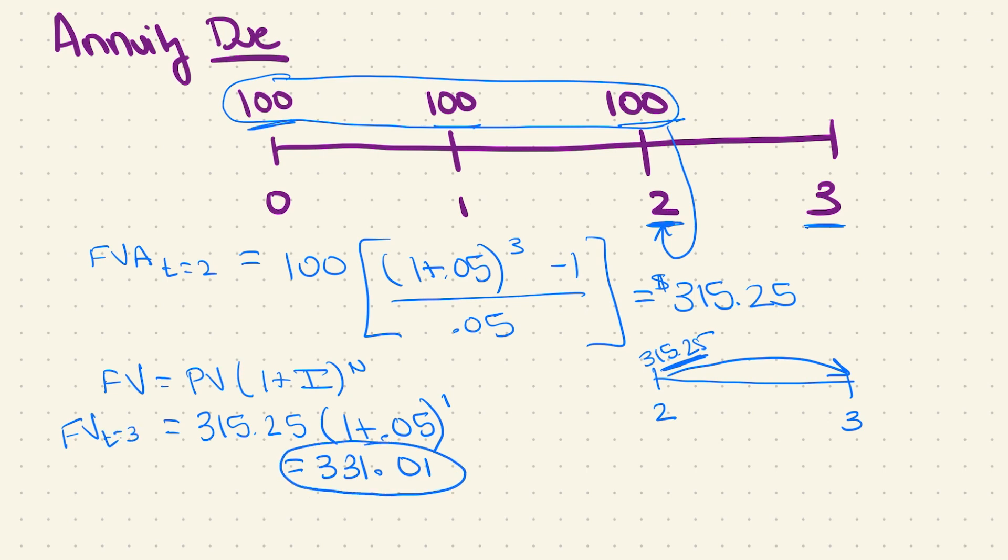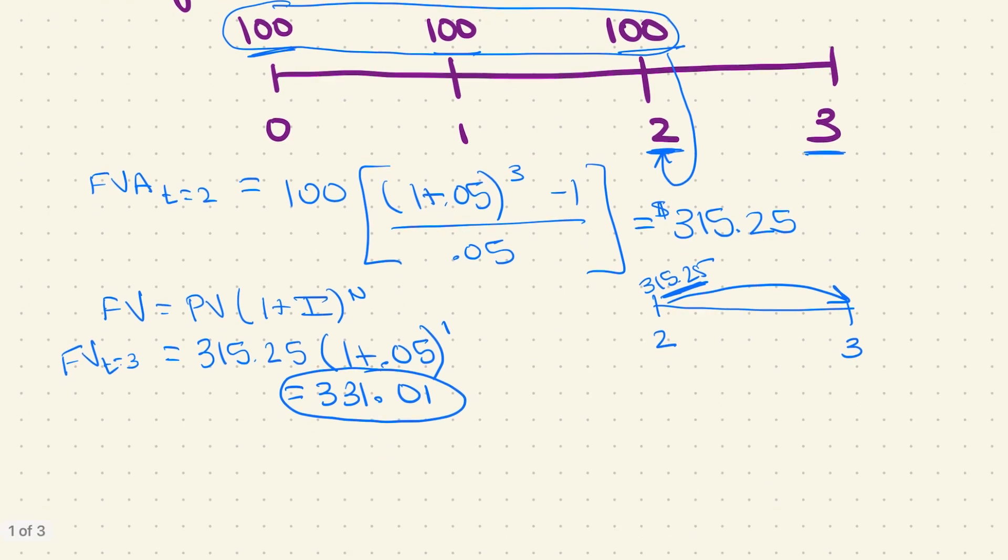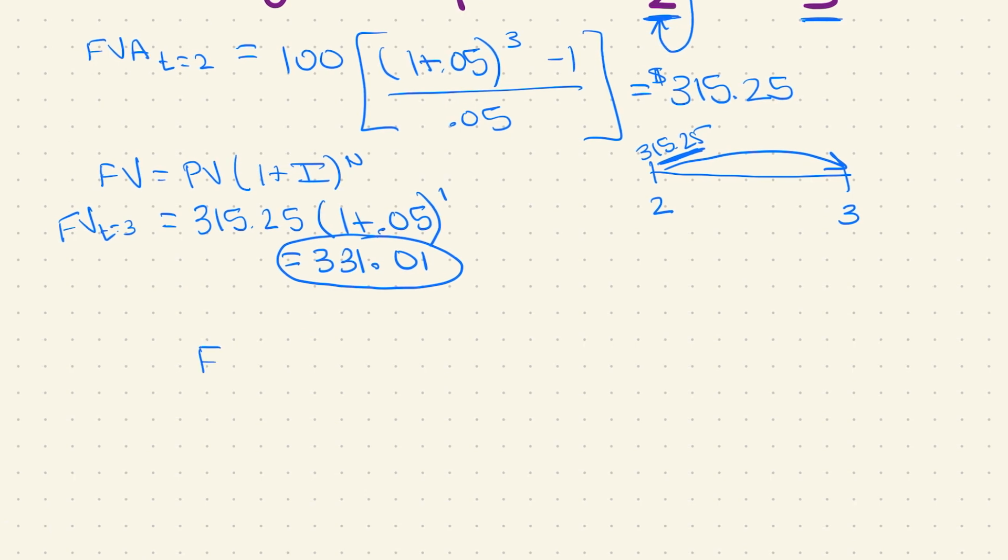Now that would be my answer. So what I can do, rather than breaking it down into two steps, is I can actually generalize this annuity due equation by saying that the future value of an annuity due equals the future value of a regular annuity compounded one additional time.